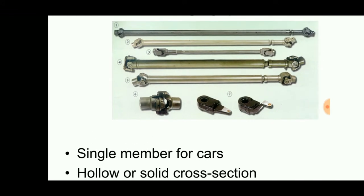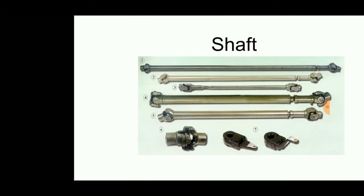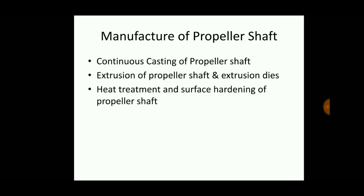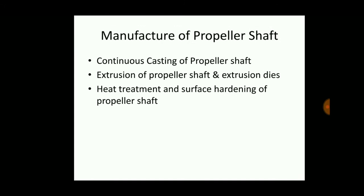The propeller shaft can be a single member for cars and can be hollow or solid in cross-section. The manufacturing methods used are continuous casting, extrusion with extrusion dies, and finally heat treatment and surface hardening to protect the shaft from property changes and environmental factors.